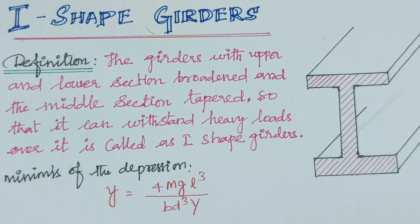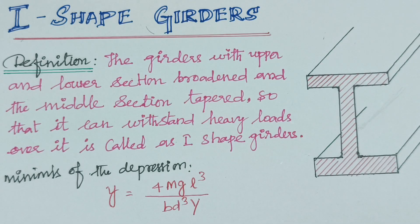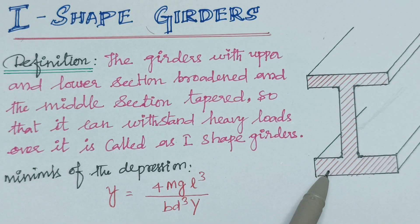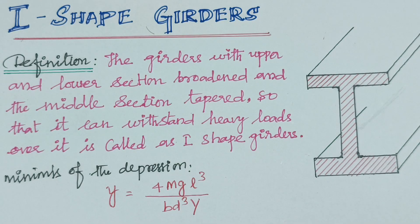This makes the beam highly stable, stronger, and more durable. The applications of the I-Shape Girder include use in bridge construction over rivers, railway tracks, and ceiling construction in buildings.